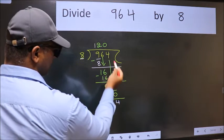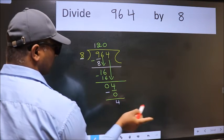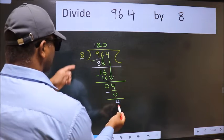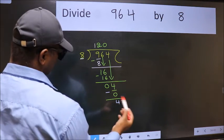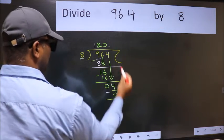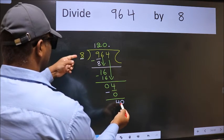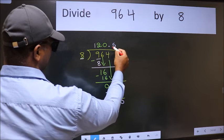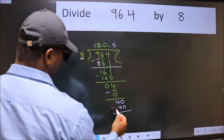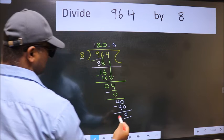Over here, we did not bring any number down. And 4 is smaller than 8. So now we can put dot and take 0. So 40. When do we get 40 in 8 table? 8 times 5 is 40. Now we subtract. We get 0.